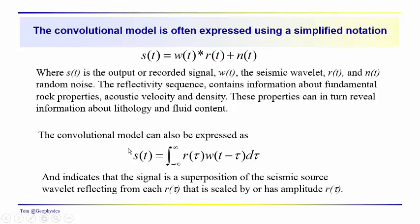This is the integral representation of the convolution operation. Convolution — if we say something is convoluted, it's usually complex and difficult. The mathematics is a bit difficult, but I think it's fairly straightforward. Basically, the signal we get is a superposition of the seismic source wavelet reflected from each of the reflection coefficients, and the wavelet is also scaled by the amplitude of the reflection coefficient.